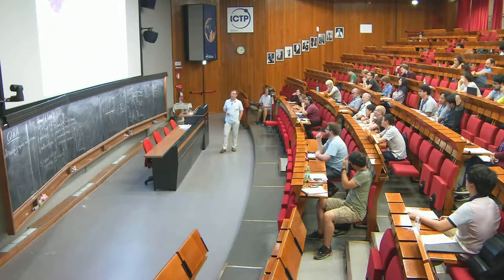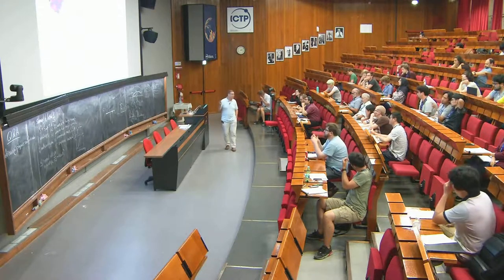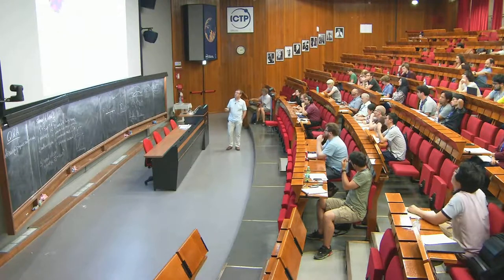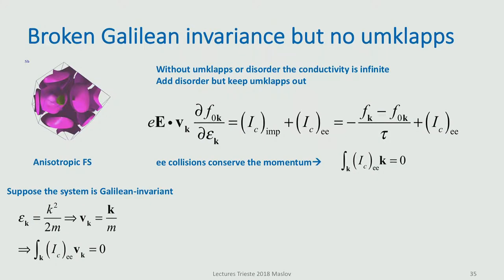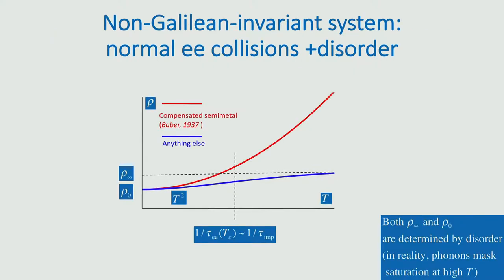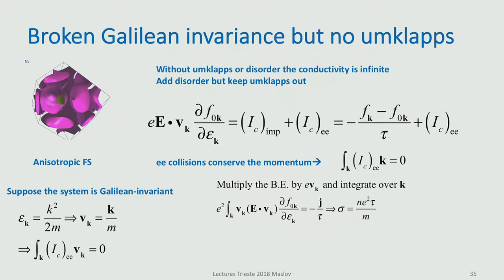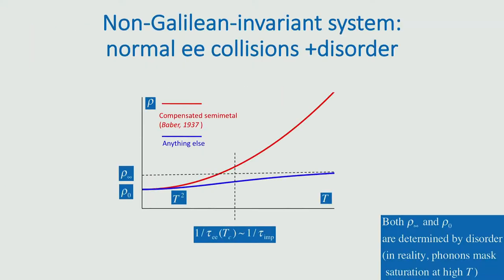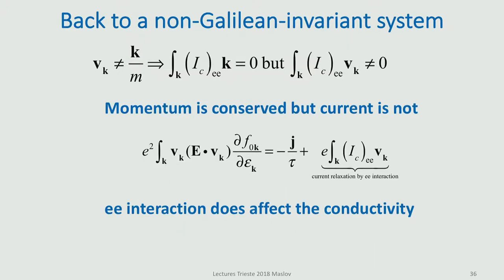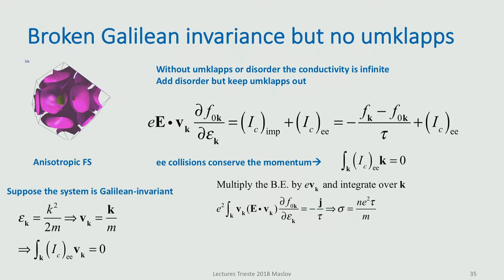If the system were Galilean invariant, then conservation of momentum would be identical to conservation of the current. So what I would do: I would take the Boltzmann equation, integrate it by the current, which is the velocity. In this way, I would get rid of the electron-electron term. The impurity term will survive, and that will determine the relationship between the current and the conductivity, giving a conductivity where there is no effect of electron-electron interactions.